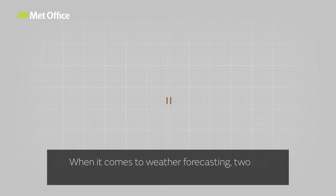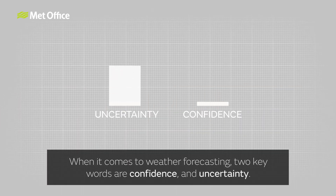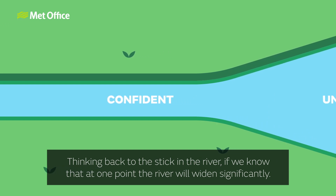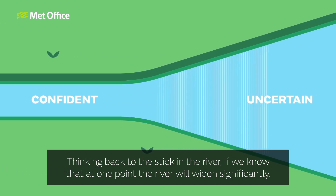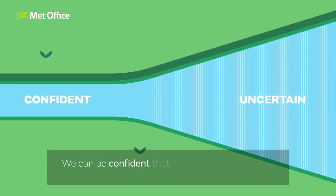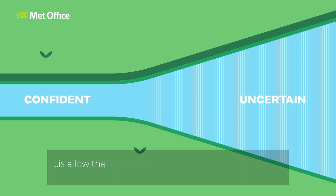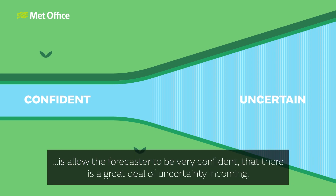When it comes to weather forecasting, two key words are confidence and uncertainty. Thinking back to the stick in the river, if we know that at one point the river will widen significantly, we can be confident that there will be a great deal of uncertainty when the stick reaches this area. Likewise, in weather forecasting, sometimes the best that a forecast can do is to allow the forecaster to be very confident that there is a great deal of uncertainty incoming.